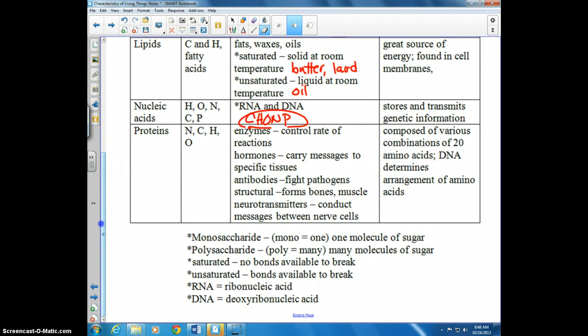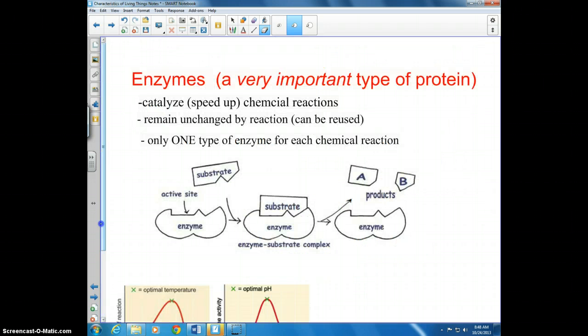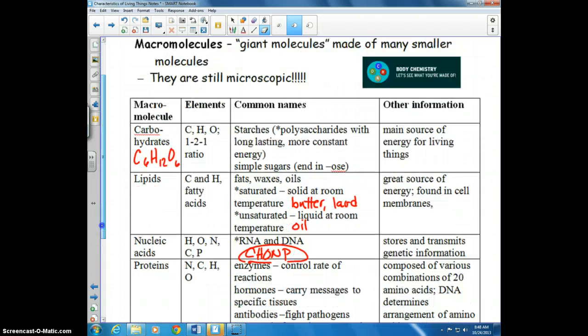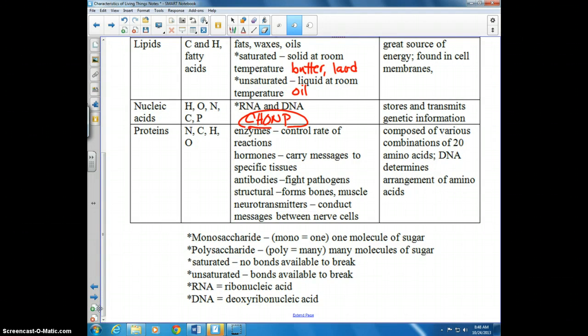There are a couple of words you need to know. You might see monosaccharide or polysaccharide. A saccharide is just a sugar. Mono means one molecule of sugar, poly means many smaller molecules of sugar put together. Saturated fats have no bonds available to be broken, so they're more likely to be stored rather than used for energy, unlike unsaturated fats which have bonds that can be broken. RNA stands for ribonucleic acid and DNA stands for deoxyribonucleic acid. That's a quick lowdown on macromolecules, which you'll be expected to know for your exam on Wednesday.